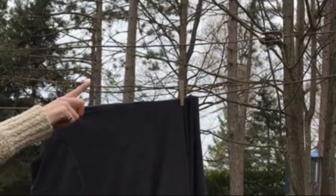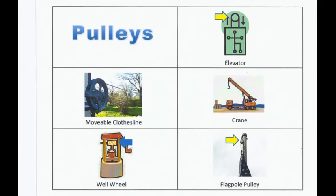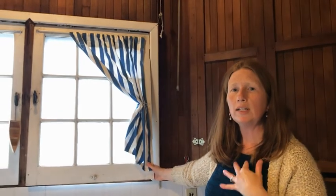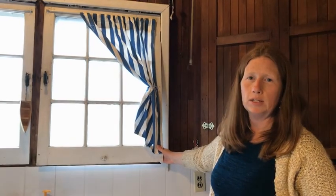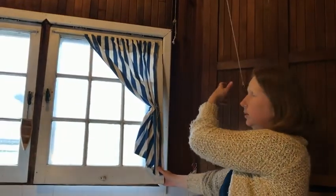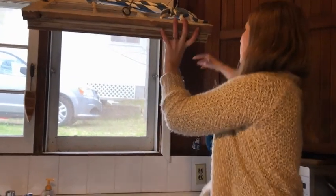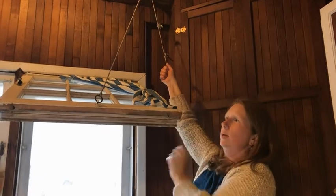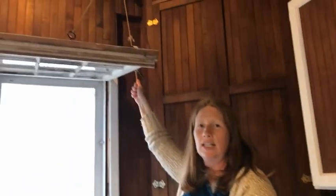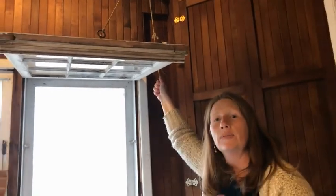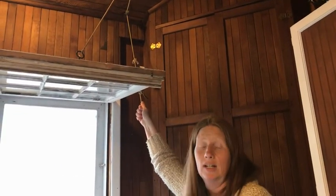Pulleys are used all over the world — in elevators, clotheslines, cranes, wells, and flagpoles. They can change direction or even change the amount of effort or force needed to make something move. In this example, the load is a window. I hook the window onto the pulley and pull the other end — when I pull down, the window goes up; when I let go, it goes down. This isn't decreasing the effort needed to lift the window, but it is helping me with direction so I don't have to climb to get something to go up high.